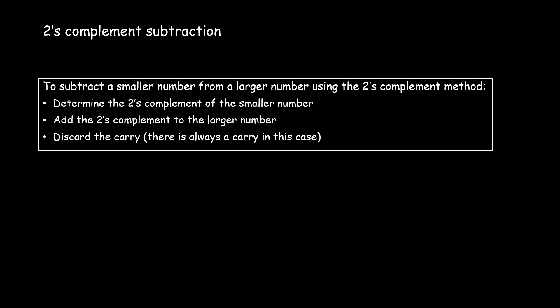Let me explain how to subtract using the 2's complement method. To subtract a smaller number from a larger number using 2's complement, we first determine the 2's complement of the smaller number, then add the 2's complement obtained to the larger number, and discard the carry.